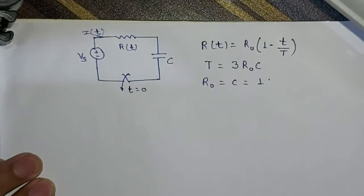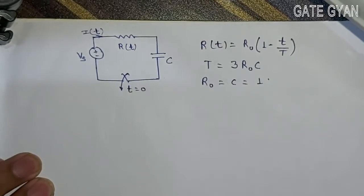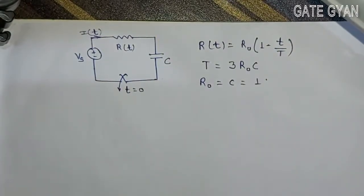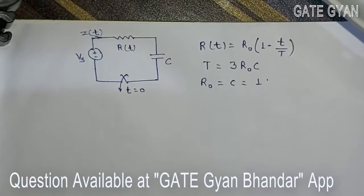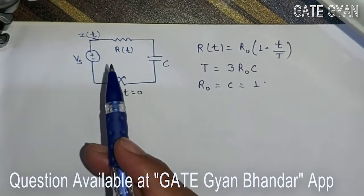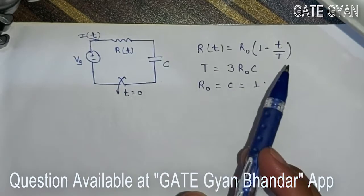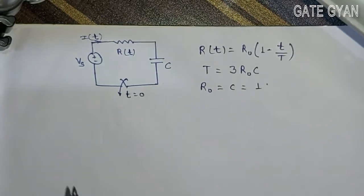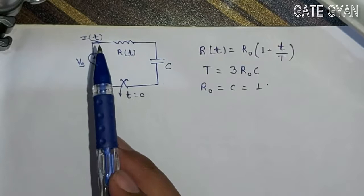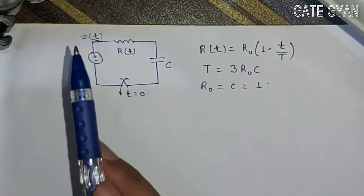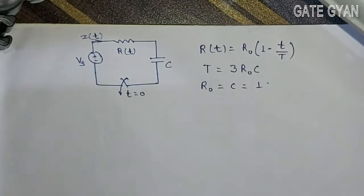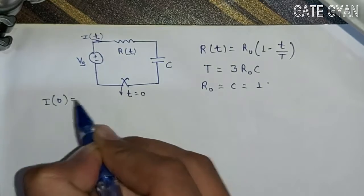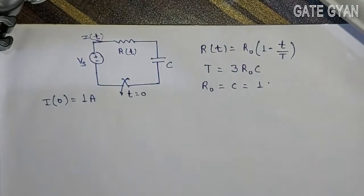Hello friends, welcome to Gideon. Today we are going to discuss network theory question number seven. In this question, we are given a time-varying resistor R(T) whose value depends on time T. Capital T is 3R₀C, where R₀ is 1 ohm and C is 1 Farad. We are asked: what will be the value of I(T) at T equals T/2? The switch is closed at T equals zero, and the initial current I(0) at T equals zero is given as 1 ampere.